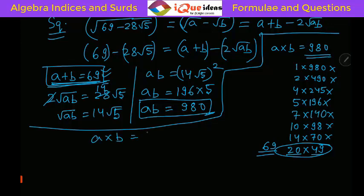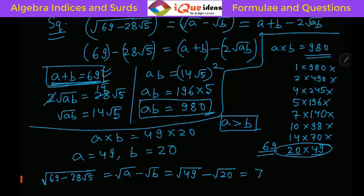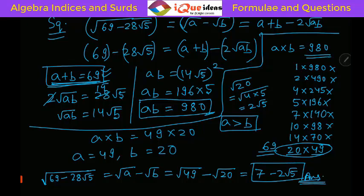Since a must be the larger value, a = 49 and b = 20. Our answer is √49 - √20. Now √49 = 7, and √20 = √(4×5) = 2√5. So the final answer is 7 - 2√5.